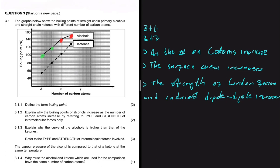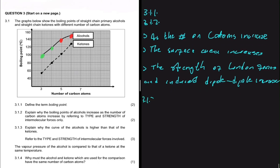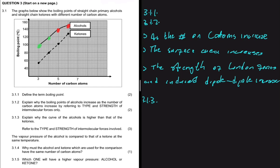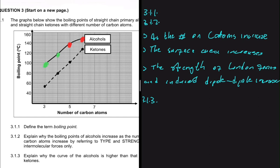Moving to 3.1.3: explain why the boiling points of alcohols are higher than those of ketones, referring to the type and strength of intermolecular forces. When we have three carbon atoms, ketones have a boiling point of about 50°C and alcohols have a boiling point of about 100°C. The question asks why, with the same number of carbon atoms, alcohols have a higher boiling point than ketones.